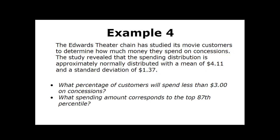Example four: The Edwards Theater chain has studied its movie customers to determine how much money they spend on concessions. The study revealed that the spending distribution is approximately normally distributed with a mean of $4.11 and a standard deviation of $1.37. What percentage of customers will spend less than $3 on concessions? What spending amount corresponds to the top 87th percentile?